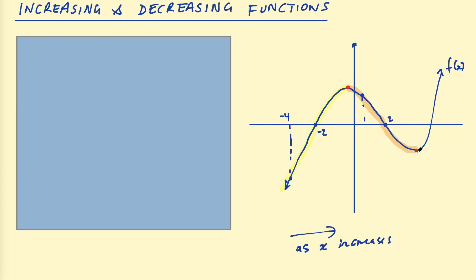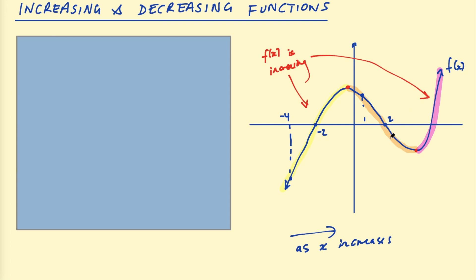So for that orange section, the function is decreasing. Then for the final section after that turning point — yes, the function is increasing again. So for the yellow section, f(x) is increasing, and for the orange section, f(x) is decreasing.